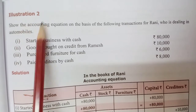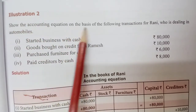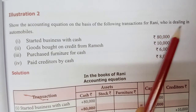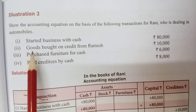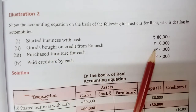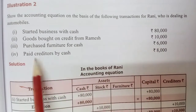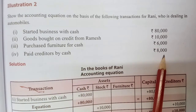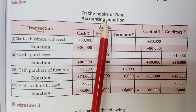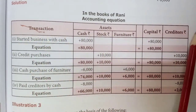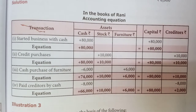Now we will see a full illustration: show the accounting equation on the basis of the following transactions for Rani, who is dealing in automobiles. The transactions are: started business with cash 80,000; goods bought on credit from Ramesh 10,000; purchased furniture for cash 6,000; paid creditors by cash 8,000. This is the model of the accounting equation — you have to use both sides of the accountancy notebook, two pages.